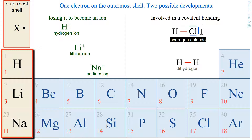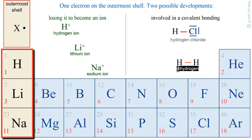This is why hydrogen chloride exists. This is also why dihydrogen exists. One hydrogen with its counterpart — if they put their electrons together, they will have a covalent bond.